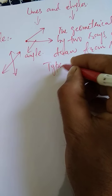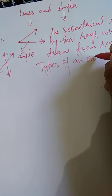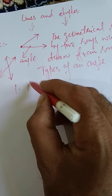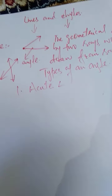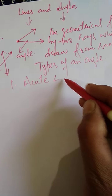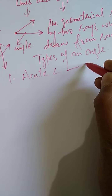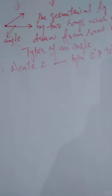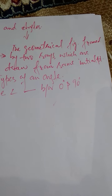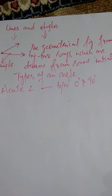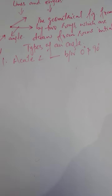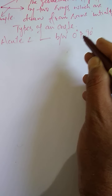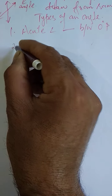Now let us discuss the types of an angle — how many types are there? The first type is called an acute angle. An acute angle is the angle whose measure lies between 0 degrees and 90 degrees — more than 0 but less than 90.